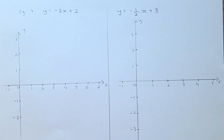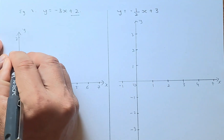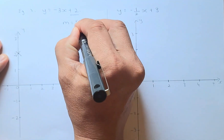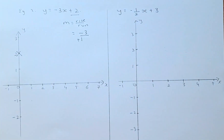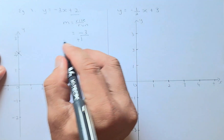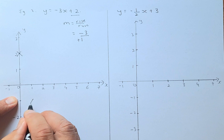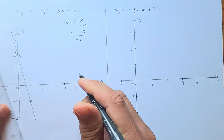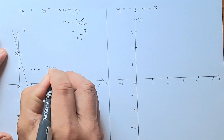For the second example, the first step is to find the y-intercept, which is 2, so you start at 2 on the y-axis. The gradient m equals rise over run: the rise is minus 3 and the run is plus 1. So from your starting point you go down 3, then run across 1 to plot the second point. Draw the line through both points — because the gradient is negative, the graph goes downward. The equation is y equals minus 3x plus 2.